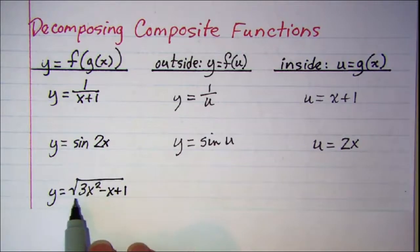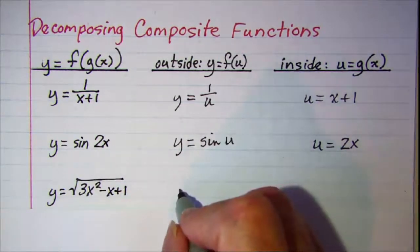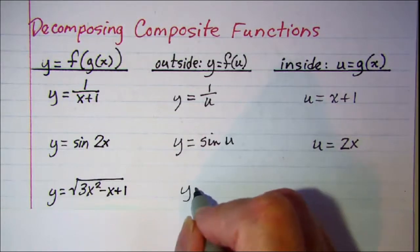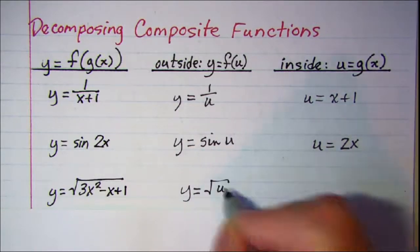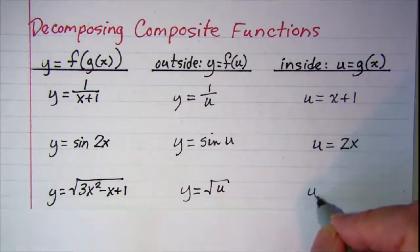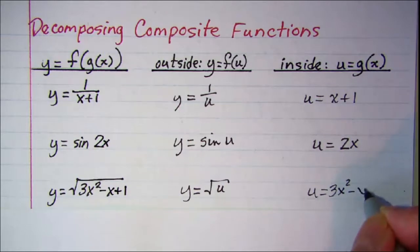Our next one we have the square root of something, so we have our outside function is y equals the square root of u, and then u is 3x squared minus x plus one.